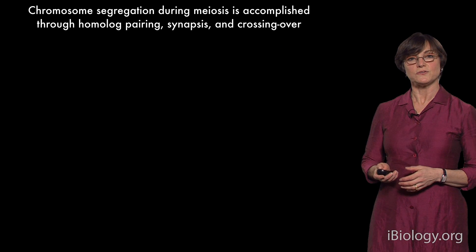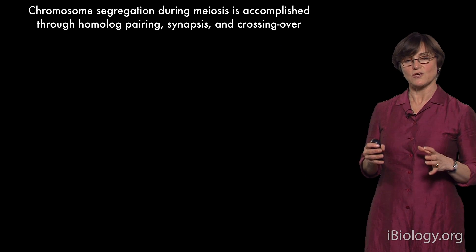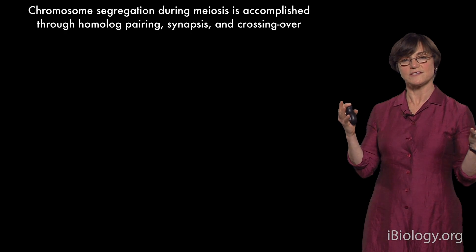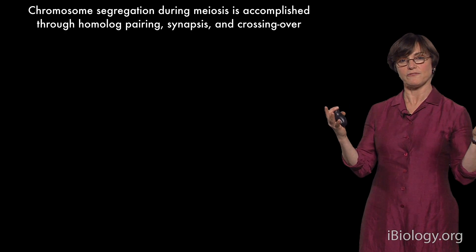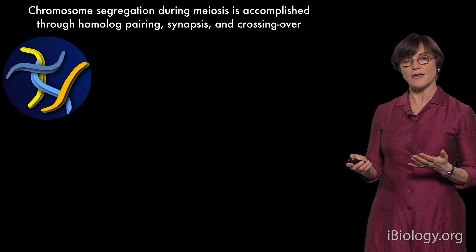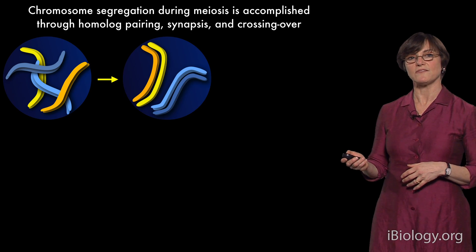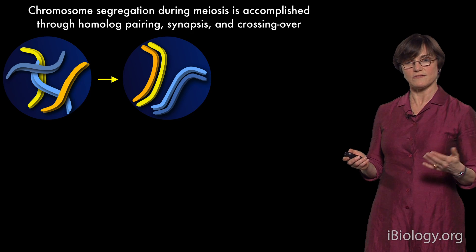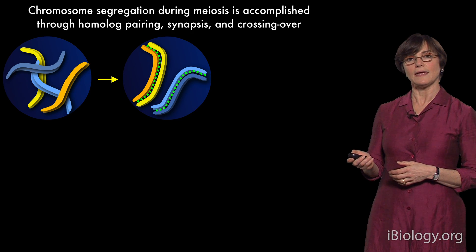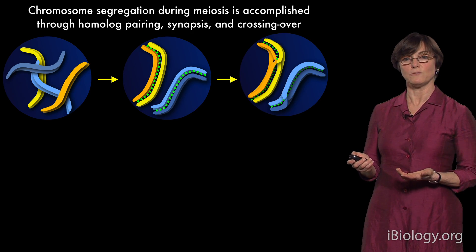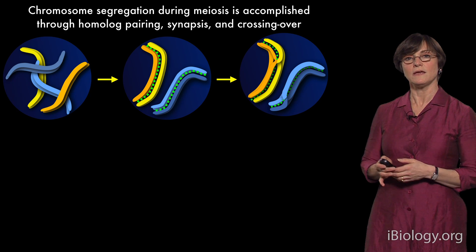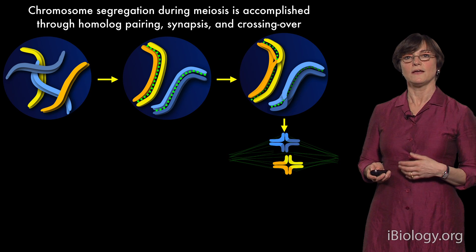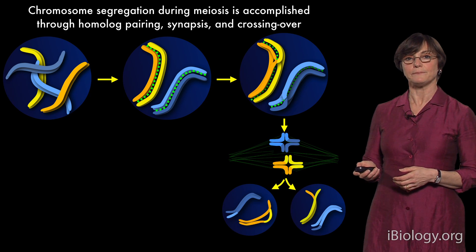During meiosis, the goal is to separate homologous chromosomes — the copy of the same chromosome inherited from the mother and the father. In order to do that, chromosomes have to pair with each other, they have to undergo synapsis — the formation of the synaptonemal complex — and they have to undergo recombination, in which DNA is cut and repaired to give rise to crossovers, which hold chromosomes together until they're ready to segregate.